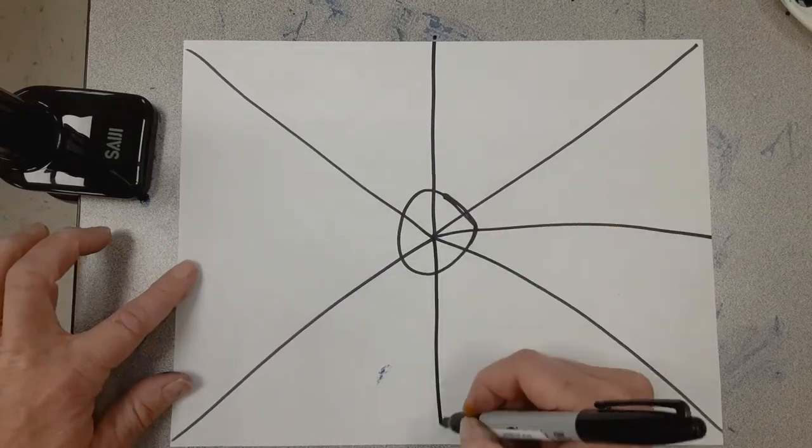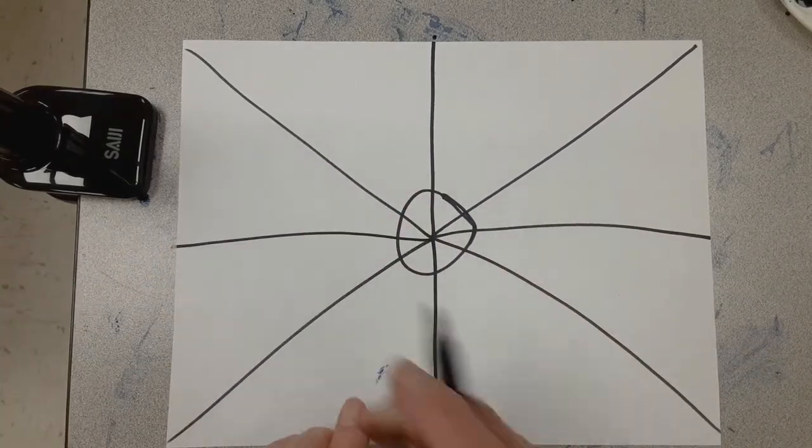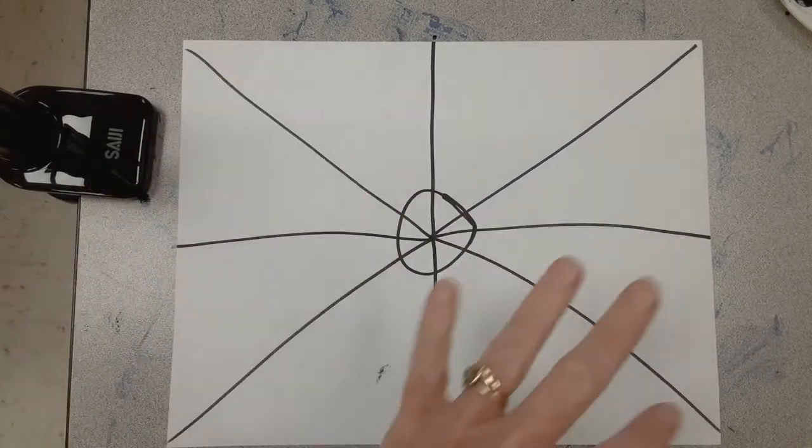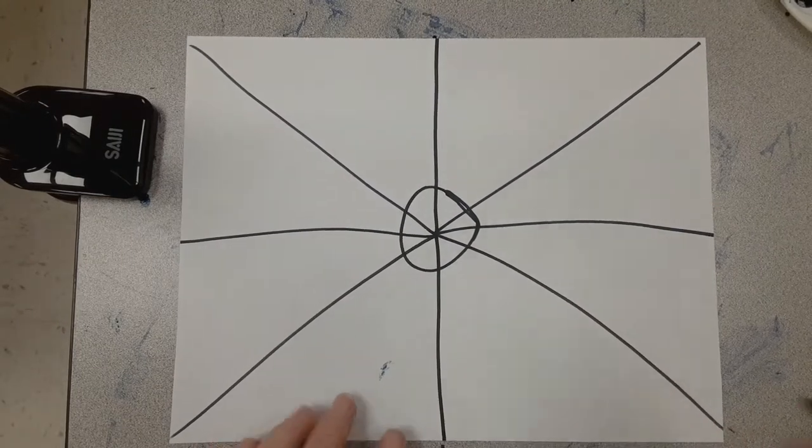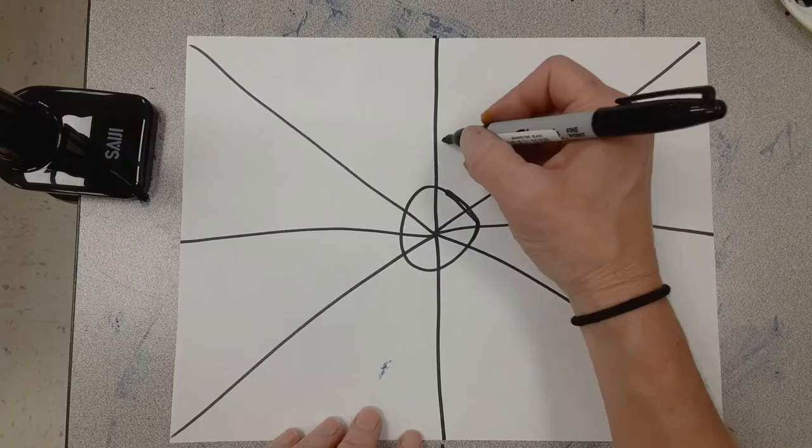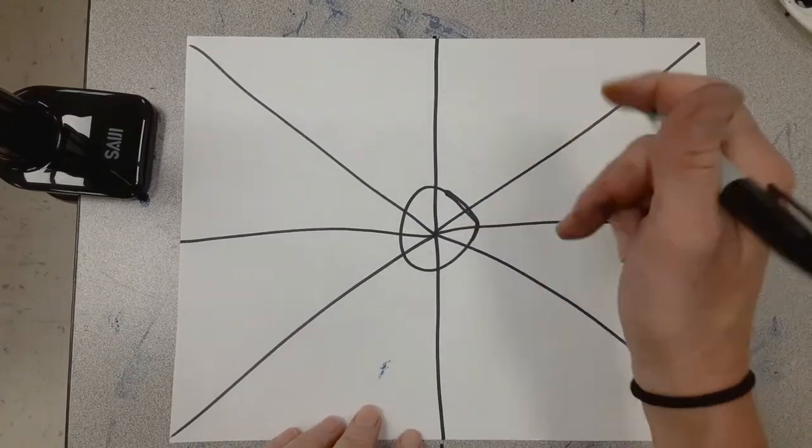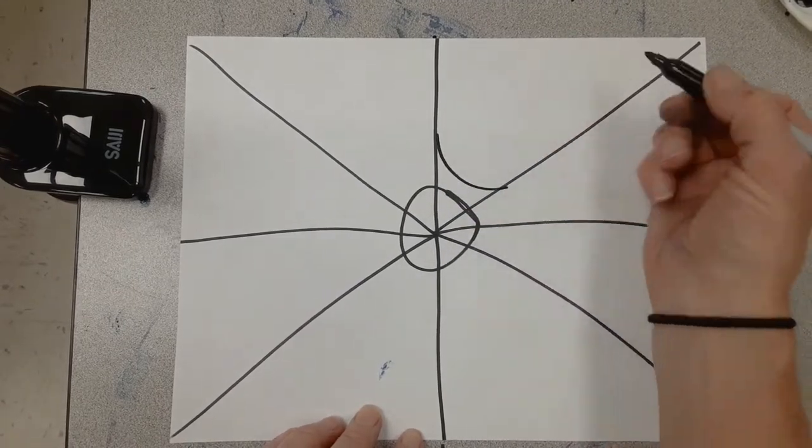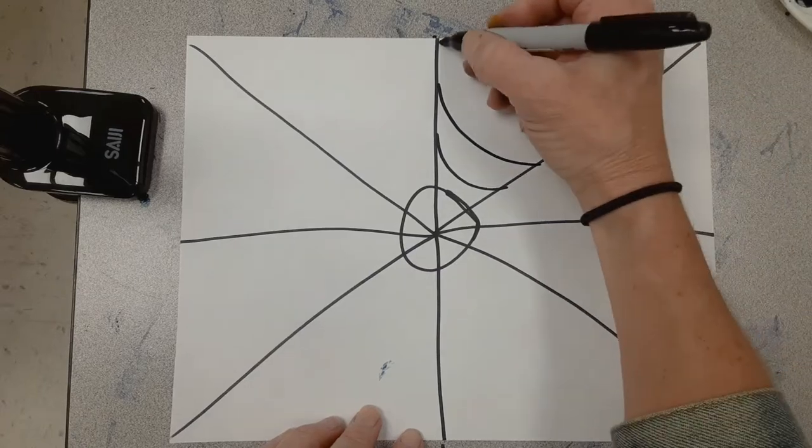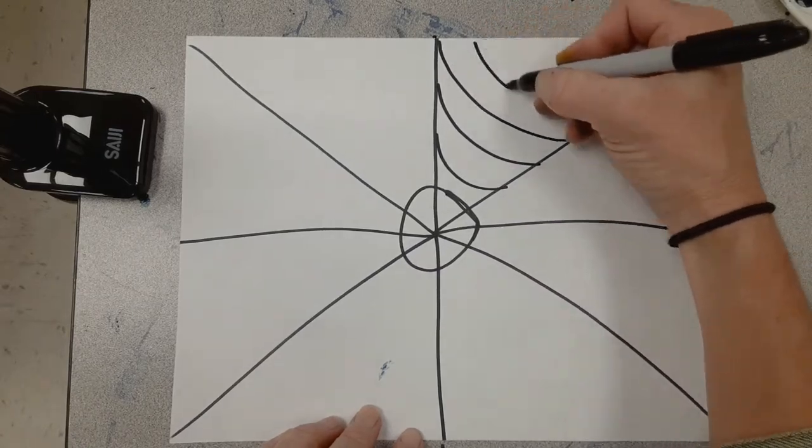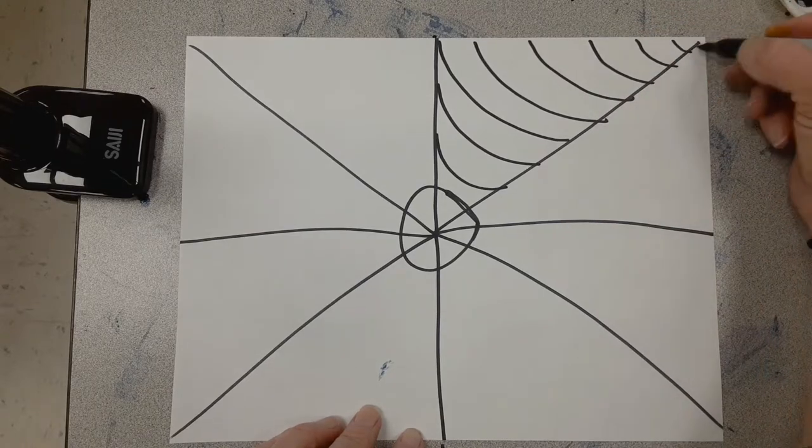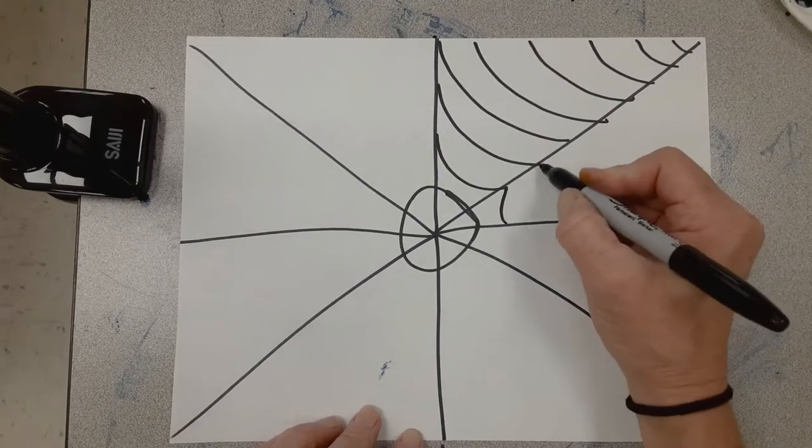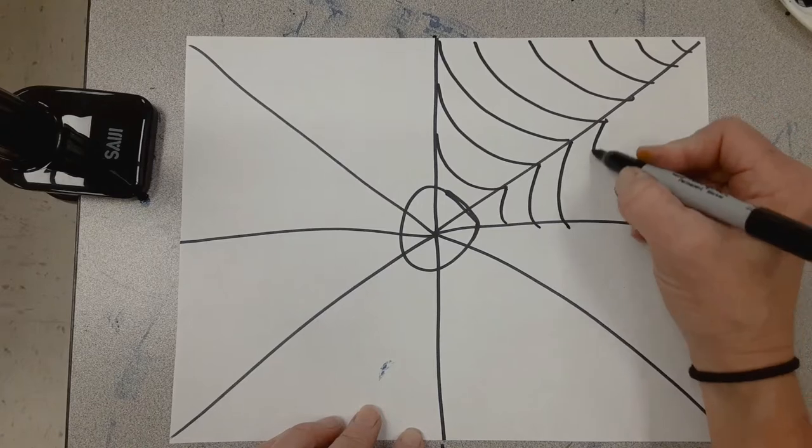Go back to the center. Then you're going to draw a line straight up, a line across, a line down, and another line across. So you have eight lines coming from the center. Now what we're going to do is go between these sections and we're going to draw some curved lines like this all the way up.